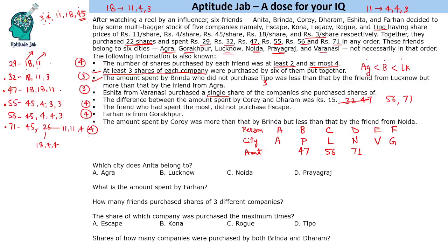One more point: the friend who spent the most did not purchase Escape (the 11-rupee share). So the person with total 71 does not have an 11-rupee share. That person's distribution would be 45, 18, 4, 4.